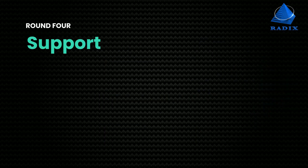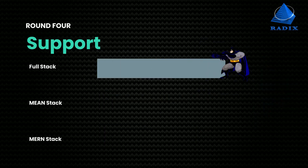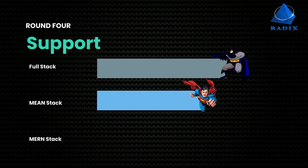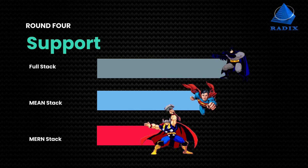4. Third-party support. Fullstack offers various libraries such as jQuery, Less, etc. Meanstack offers different ready-to-use features. Mernstack requires additional libraries for supporting similar requests.